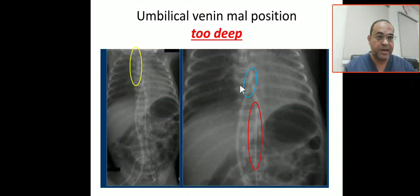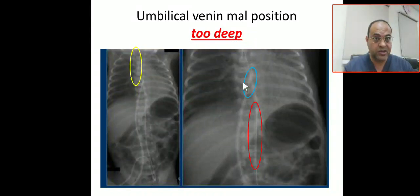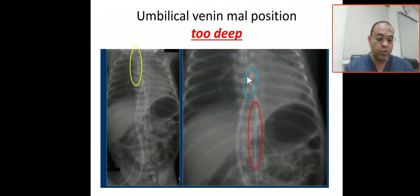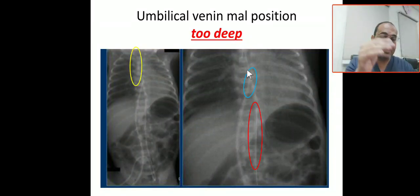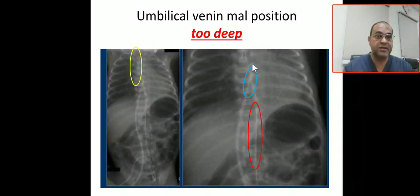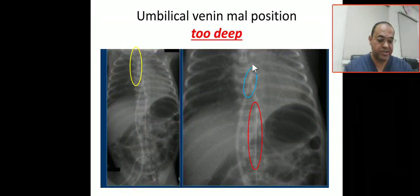If you see here the umbilical vein — marked in blue — it is actually too deep. This is malposition of the umbilical venous catheter. The proper position should be in the inferior vena cava, just at the level of the diaphragm. But here the umbilical venous catheter goes from the inferior vena cava to the right atrium, through the foramen ovale or atrial septal defect, into the left atrium, and can even go to the pulmonary veins. This abnormal position of the umbilical vein catheter in the heart can lead to perforation and arrhythmia.